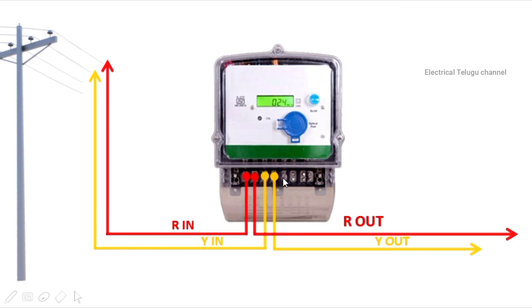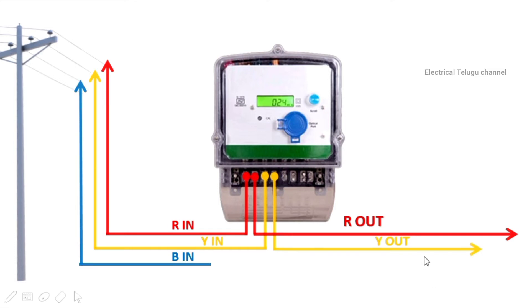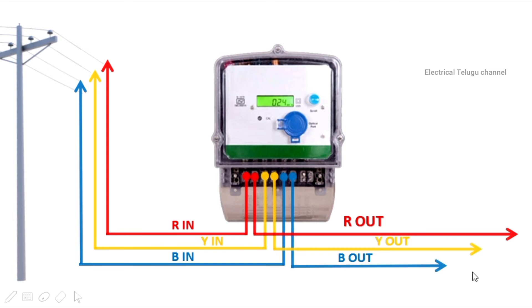The next line is B-in. B-in means blue wire. You can see the blue wire going through to the meter and then to the switchboard.